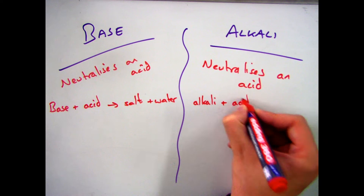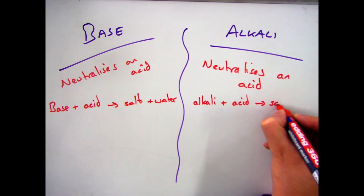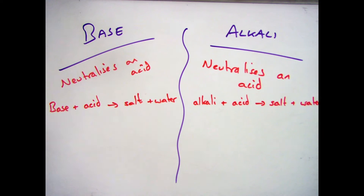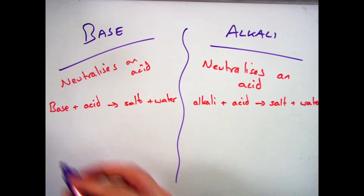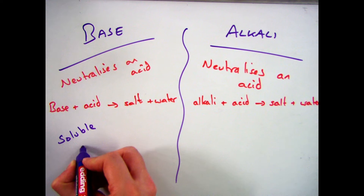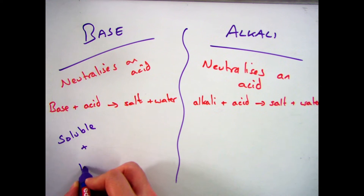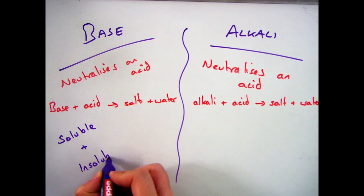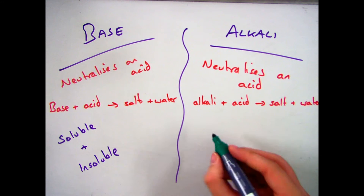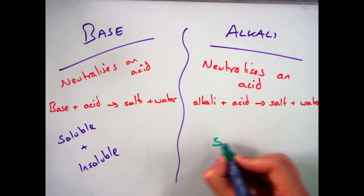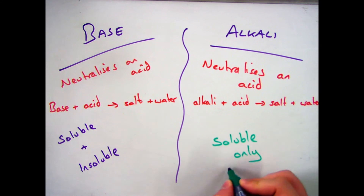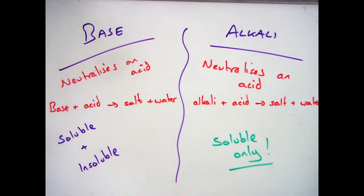You might notice at the moment there isn't a huge amount of difference between the two. There is only really one difference, and that's down to solubility. A base can be soluble or insoluble — it can dissolve to make an aqueous solution or it can stay as a solid. However, an alkali is only something that is soluble. So if it dissolves, it is an alkali and it's a base. If it doesn't dissolve, it's just a base.